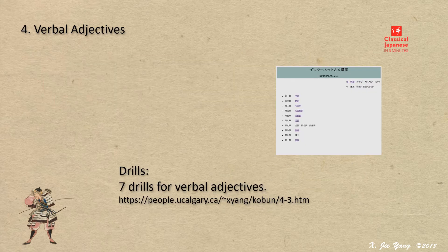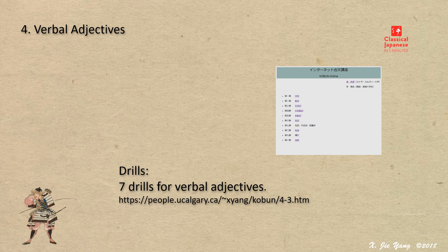Seven drills are prepared for verbal adjectives: six drills each covering one form in the conjugation, and the last drill is on the use of its stem in verbal adjectives. See you at the next lecture.